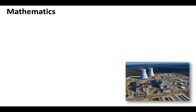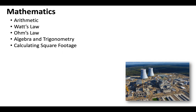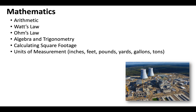When it comes to the mathematics on the general engineering contractor license exam, make sure your arithmetic is tight — addition, subtraction, multiplication, and division. Many of the electrical-related questions will draw from Watts' law and Ohm's law. Certain sections of engineering draw from algebra and trigonometry, calculating square footage, and your units of measurement: inches, feet, pounds, yards, gallons, and tons. Job costing and estimation will always include decimals and percentages, so these are the math concepts you want to be prepared for.